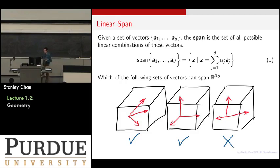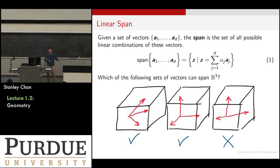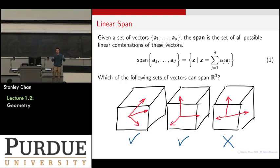For example, if you have R3, a three-dimensional vector space with all real numbers, any three independent vectors can span the entire R3. They do not need to be orthogonal — even if they are tilted, you are fine. But if two of the vectors are parallel — one is the opposite of the other — they do not span the entire R3; they only span R2. This is the notion of linear span.